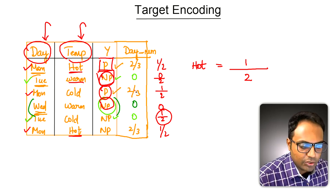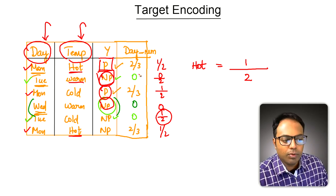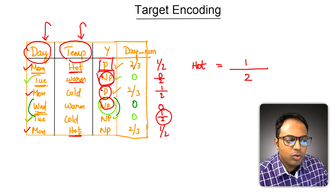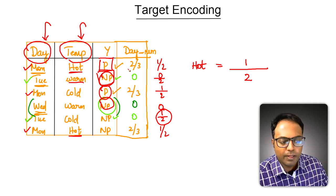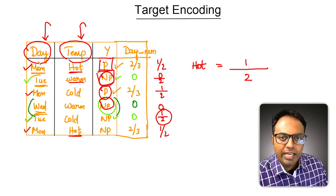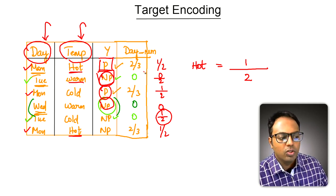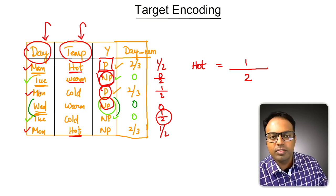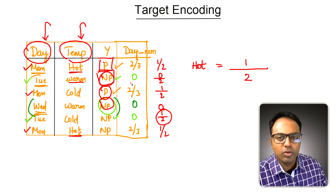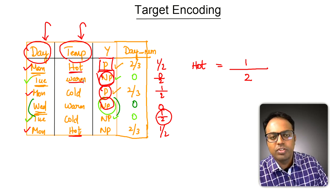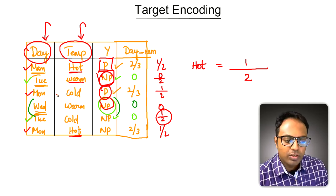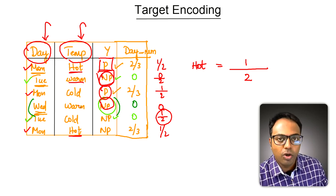If you think about it, all these ratios we have computed are nothing but probability. If it is a Monday there is a 2/3 chance the children are going to play. In a real-world dataset you will have many more rows, so these probability values will be more realistic. In this small dataset, zero is very easy to occur, but in real data zeros should typically not occur if there are sufficient observations.